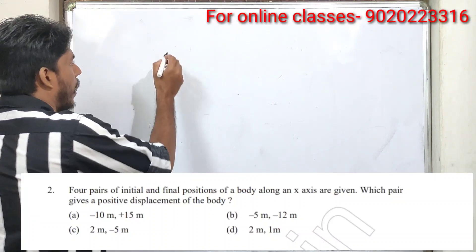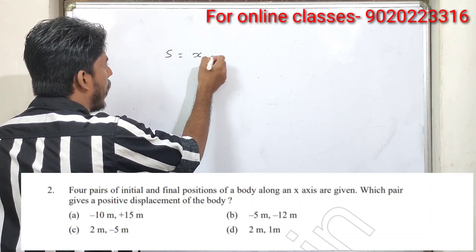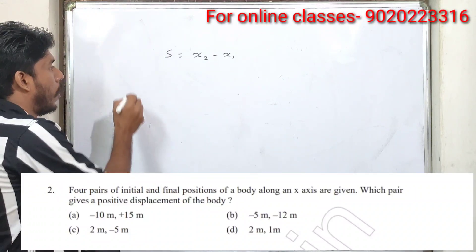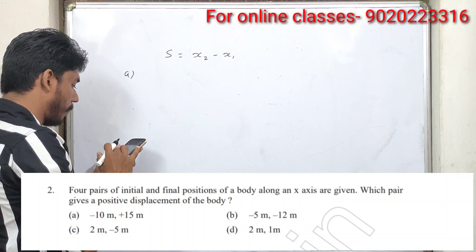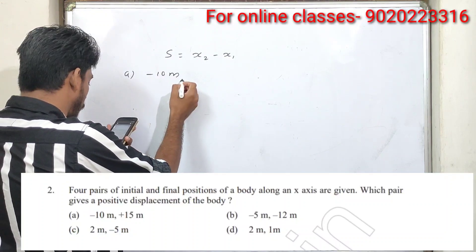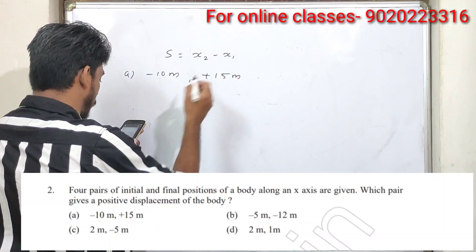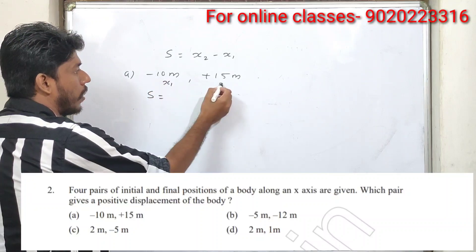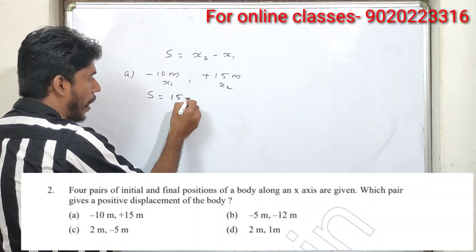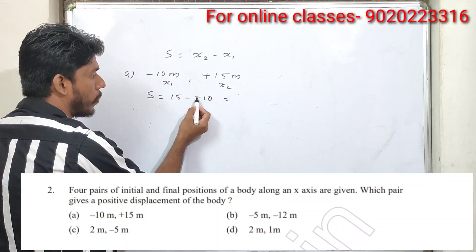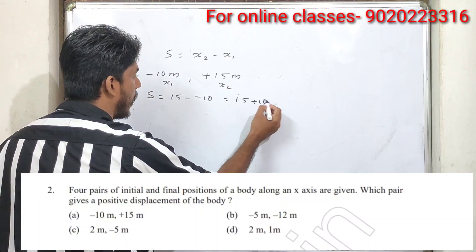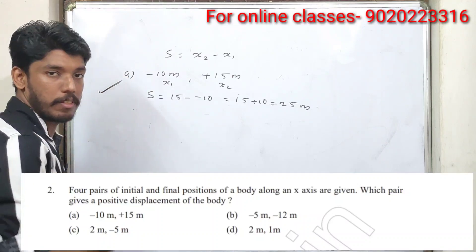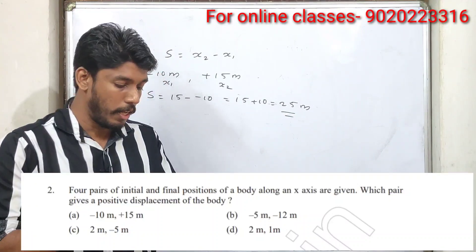Displacement is x2 minus x1 — that is the final position minus the initial position. For option A: initial position x1 is minus 10 meters, final position x2 is plus 15 meters. So x2 minus x1 is 15 minus minus 10, which is 15 plus 10, giving 25 meters. This is positive displacement. Option A is the answer.